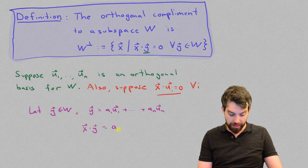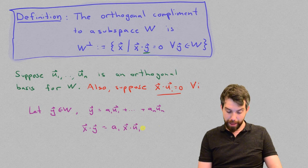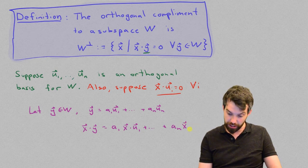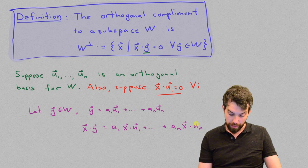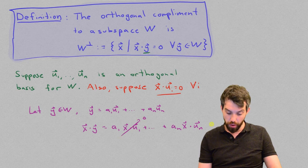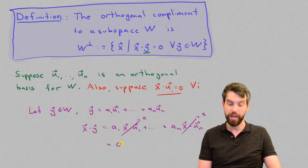Well, the a1 comes out the front, we know dot product distribute, so it's going to be x dot u1, and then we're going to go all the way along to the an, and then we're going to take just the vector x here dotted with the un. And then, because our assumption here is that all of these are 0, all of these terms are going to be 0, and the dot product is going to be 0 as well.